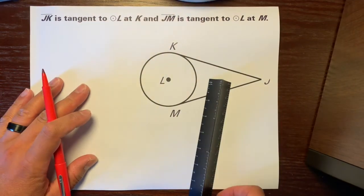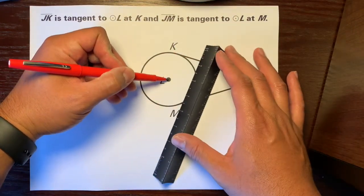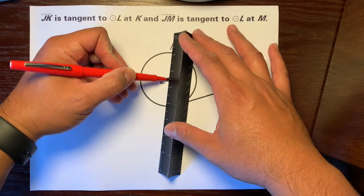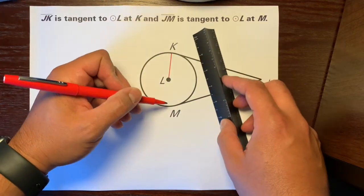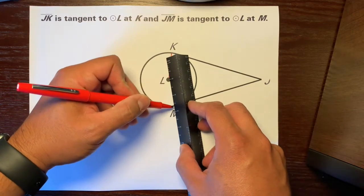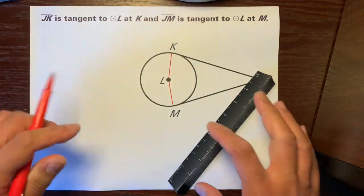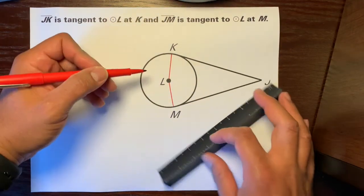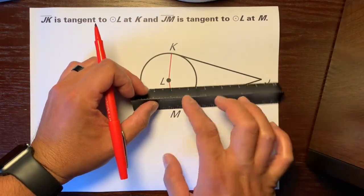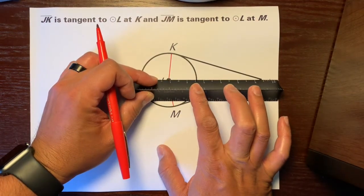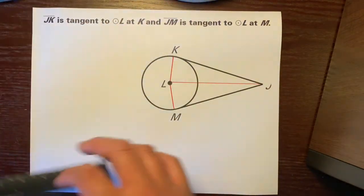Then, what you're going to do is, you're going to take your straight edge, go from the center L, and go to that point of tangency, and then you're going to go from that center L and go to this point of tangency where M is at. Then, you're going to draw a line segment that connects L to J, from here to here, so that you have two triangles.